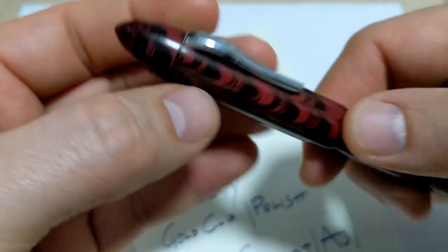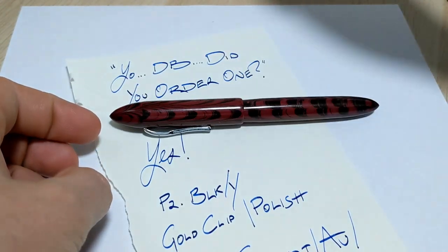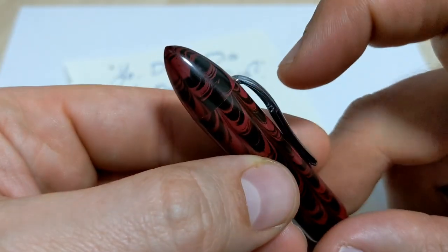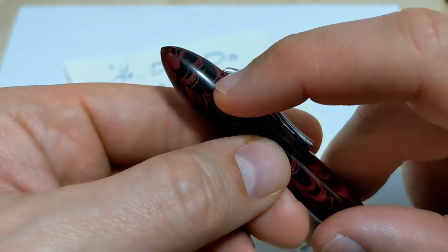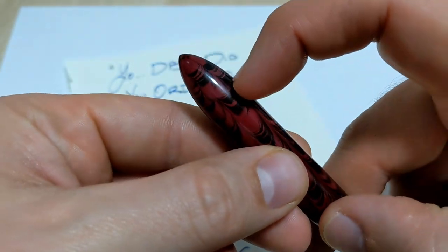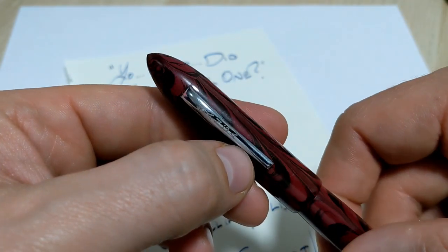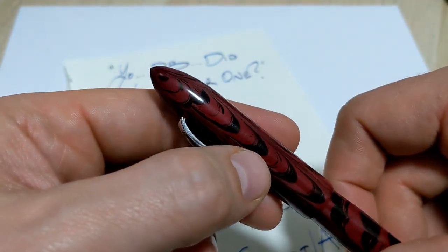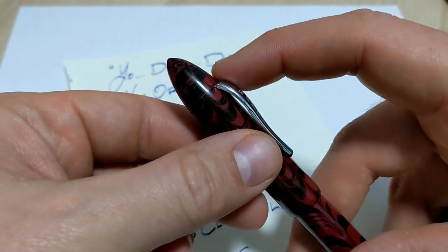One thing I was wondering: if you go clipless, I ordered mine with a clip because I don't like the roll-away pen that's gone. But you can see how something won't quite line up, you can see the seam there and your pattern.